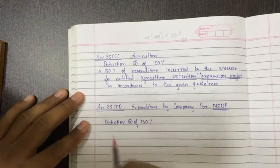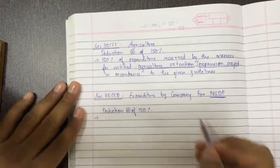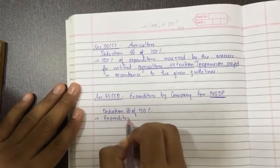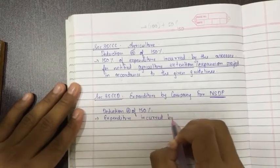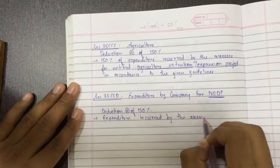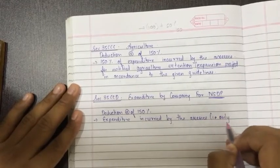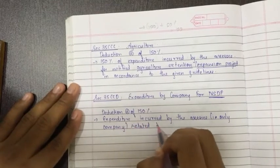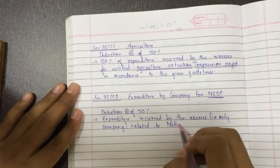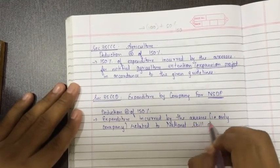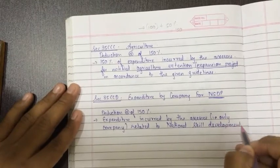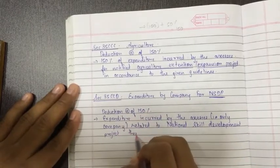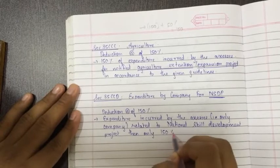Let's write the theory part. Expenditure incurred by the SSE, that is only company, related to national NSDP means national skill development project, then only 150 percent, then only 150 percent deduction will be allowed.